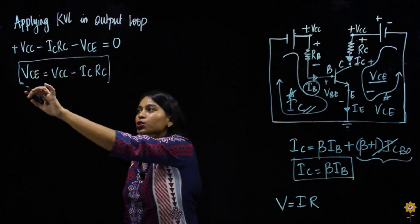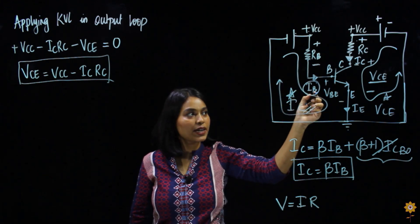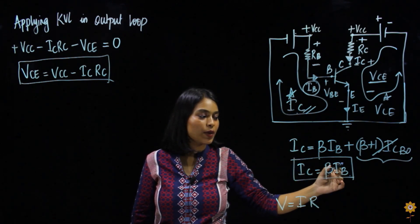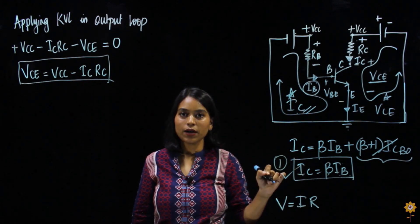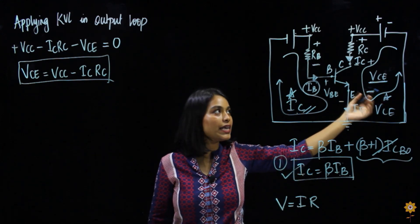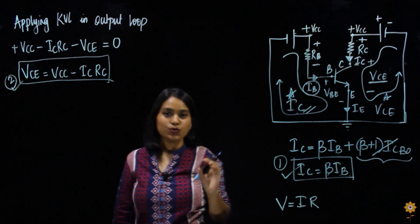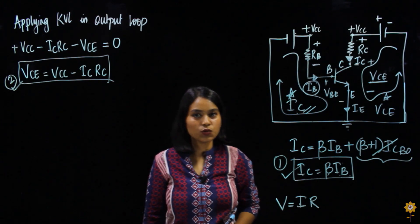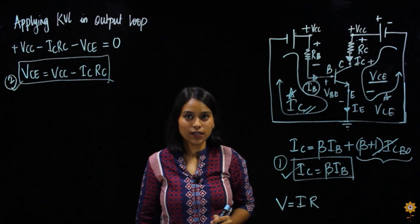By applying KVL to the input loop we found IB, and multiplying by beta gave us IC — the output current. By applying KVL to the output loop we found VCE — the output voltage. These are the two parameters needed in all three biasing techniques. This concludes the tutorial on fixed bias configuration. In the next tutorial, I will be covering the self-biasing technique. Thank you.